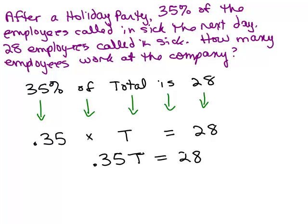Because sometimes I think, oh, is that an X? No, it's not an X. All right. So now we've got 0.35 T equals 28. So how do I solve? I can just divide both sides by 0.35 and get a calculator out and get my answer.